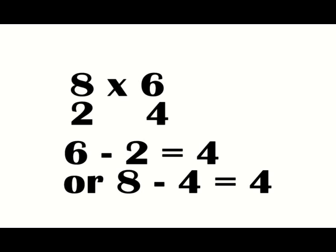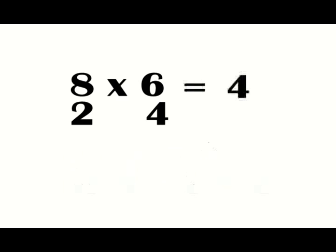8 minus 4, or 6 minus 2, the answer is the same, 4. Just take whichever of these equations is easier for you to do in your head. We have the first number in our answer. Now let's find the second. 2 times 4 equals 8. That was easy enough. Our answer is 48.